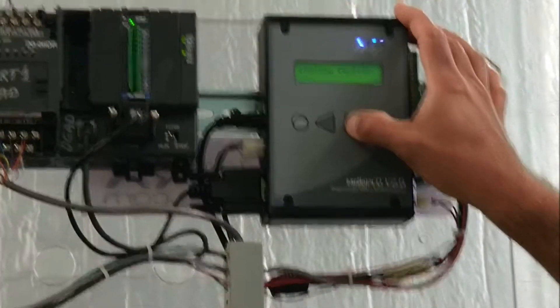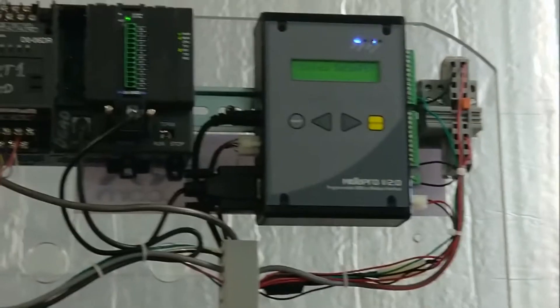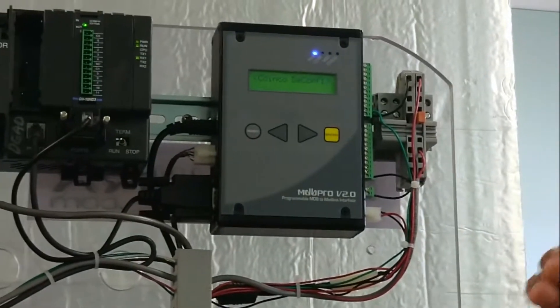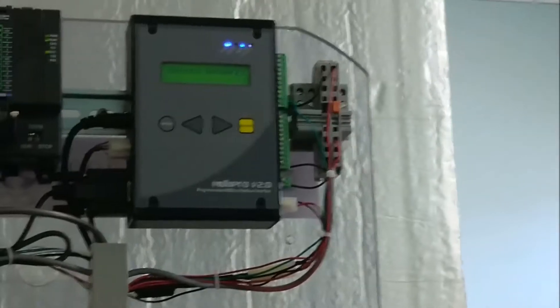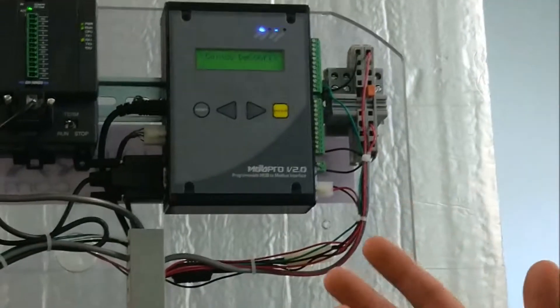If I scroll to the right, there is also a CoinCo Deconfig option, which allows me to convert a secondary bill acceptor back to primary. We don't want to do that today.